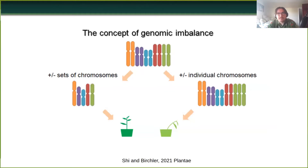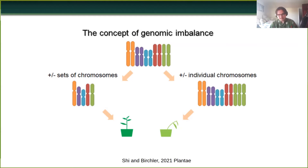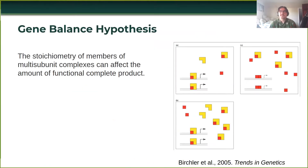The concept of genomic imbalance has been something that scientists have observed for about a century, starting with Blakeslee. The general idea is that when you increase or decrease the number of individual chromosomes, there's a more deleterious effect than if you increase or decrease entire sets of chromosomes. And while this was observed repeatedly, there wasn't a clear idea of what the cause of this was. Several decades later, the gene balance hypothesis was proposed to explain what produced genomic imbalance.